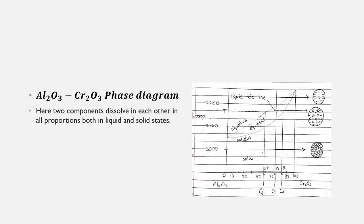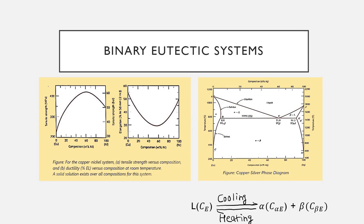If the composition of one phase is specified, the temperature and composition of the other phase are automatically fixed. Solid solubility is limited in binary systems but not zero. On cooling through the liquidus into the two-phase region, solid crystals of composition C_S coexist with liquid of composition C_L.